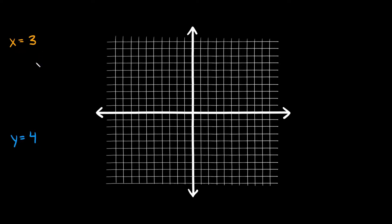So let's start with x is equal to 3. What I'm going to do first is plot some points. This first point right here sits at the point 3 comma 0. Now let's do another one — starting from the origin, go over 1, 2, 3 spaces and go up 1. So this point right here sits at the point 3 comma 1.